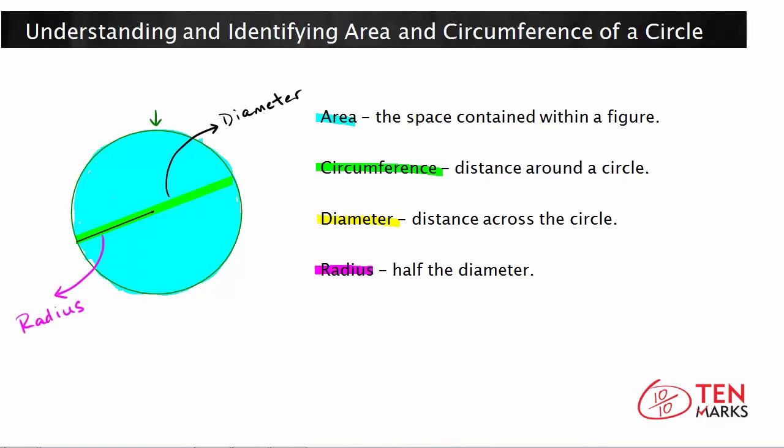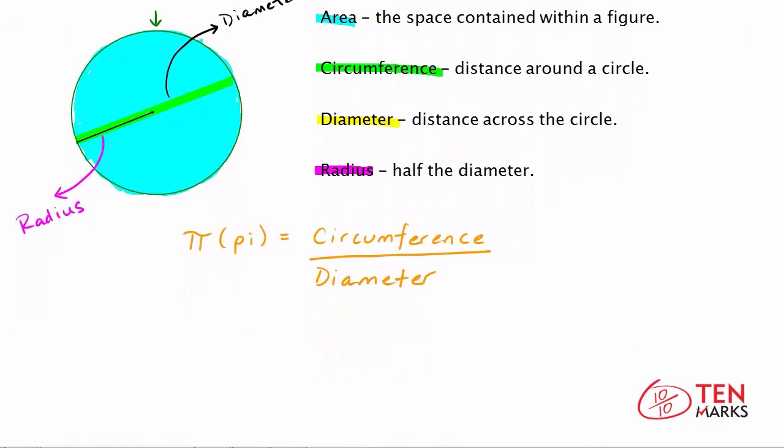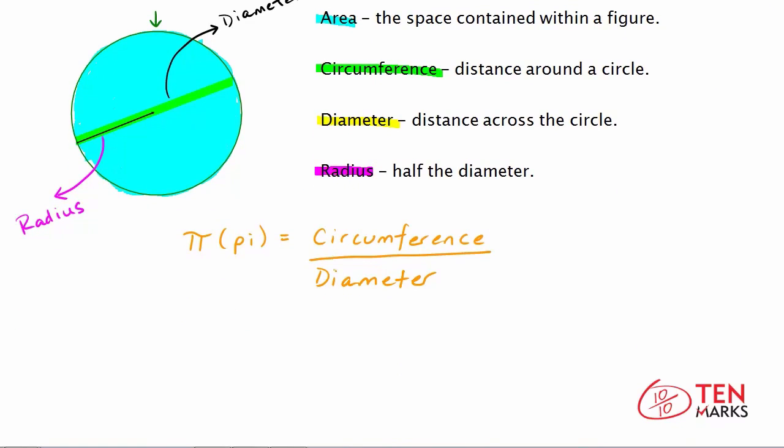All of these measurements of circles are related to one another, often by a special constant called pi. Pi is the ratio of a circle's circumference to its diameter. So if you have π = circumference/diameter, you can multiply both sides of this equation by the diameter, and you get a different equation.